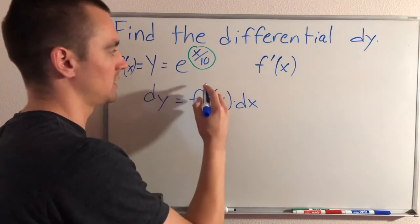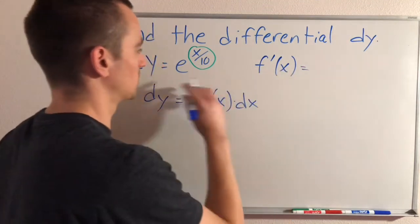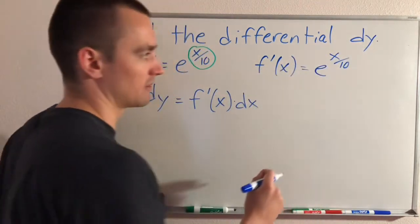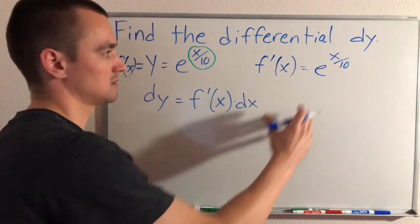derivative of the outside, leave the inside alone. If our outside function is e to the x, we would just end up with e to the x over 10, because the derivative of e to the x is just e to the x, so that doesn't change anything.